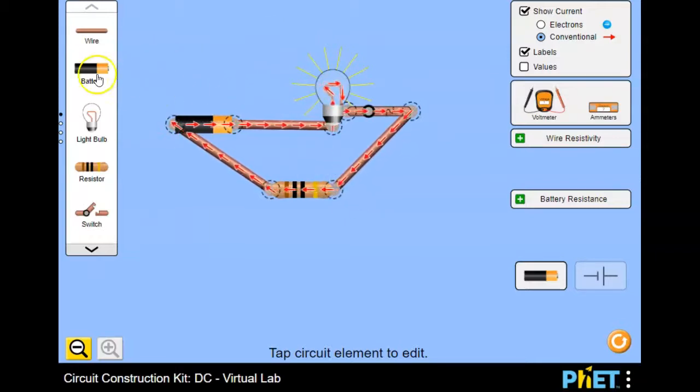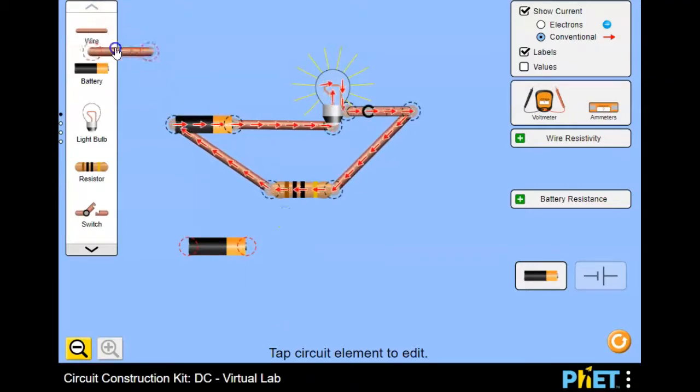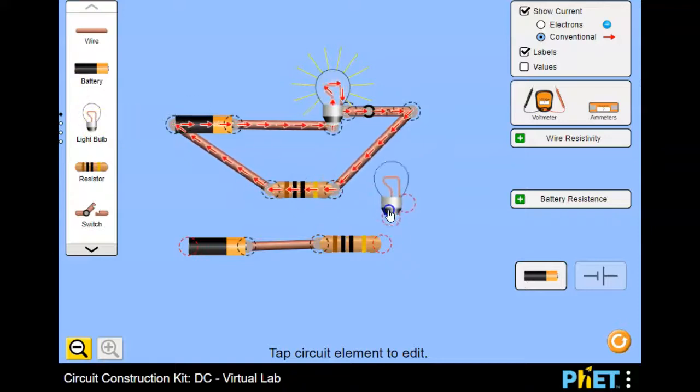There's a component menu on the left here. You can grab a component and drag it onto the workspace, and you can drag wires and resistors. You can basically wire up an electronic circuit.